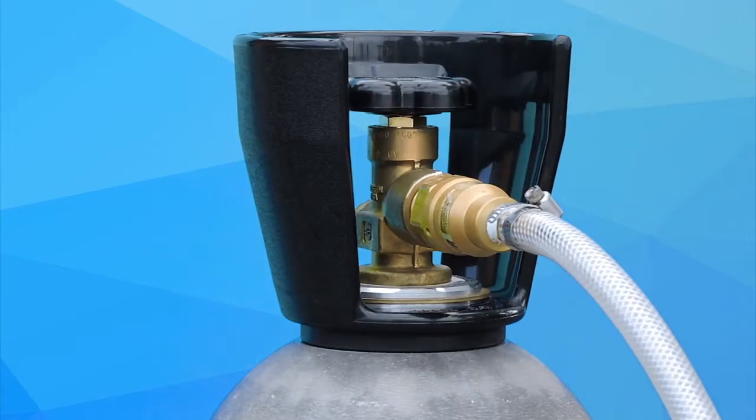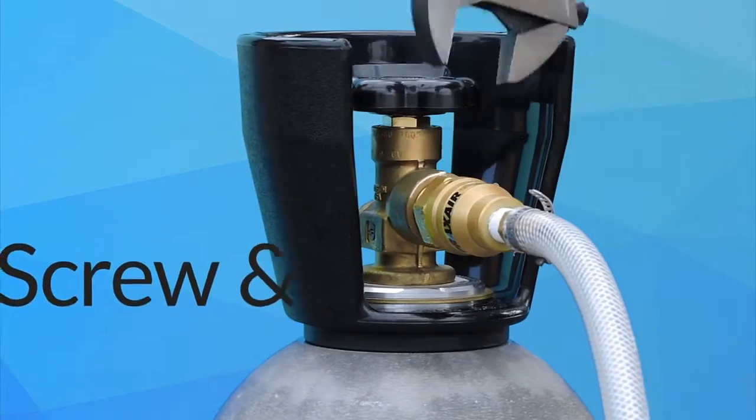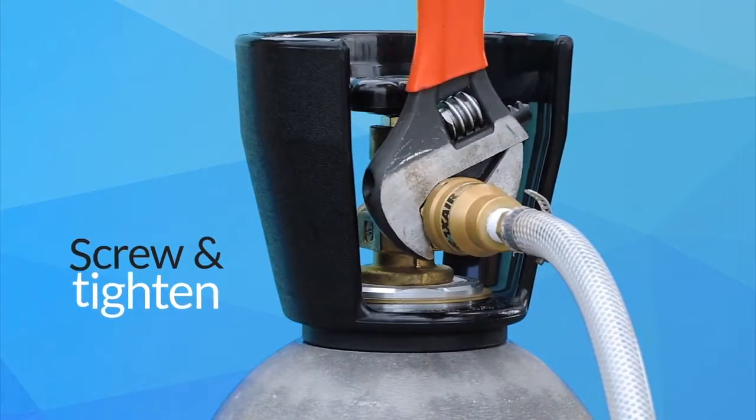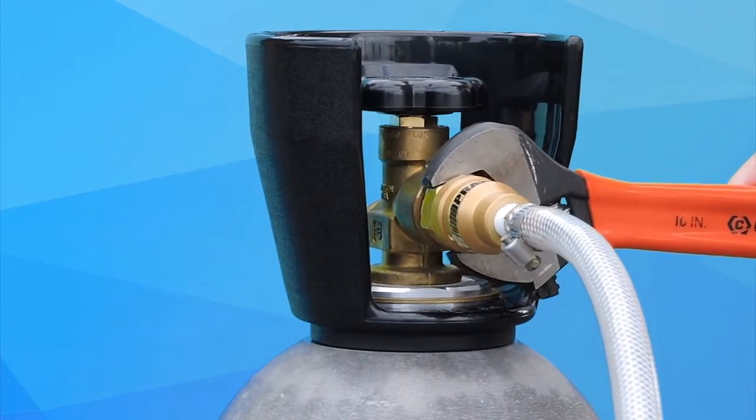Screw the bronze coupler to connection point on the valve of your choice of lift gas source. For your safety, always make sure the bronze coupler is properly tightened to the gas tank valve before releasing the gas.